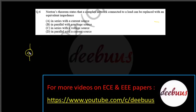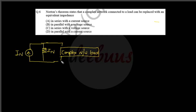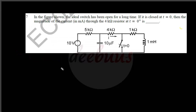Norton's theorem states that a complex network connected to a load can be replaced with an equivalent impedance. Drawing Norton's equivalent figure: Z_Norton in parallel with I_Norton. The answer is D — Norton's current is in parallel with Norton's impedance. If the complex network load is given by R + jX, then Z_Norton must be R − jX.